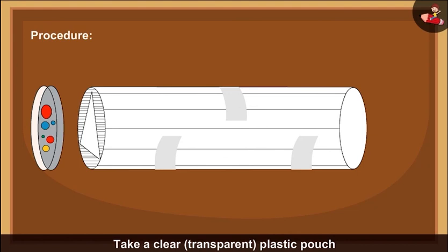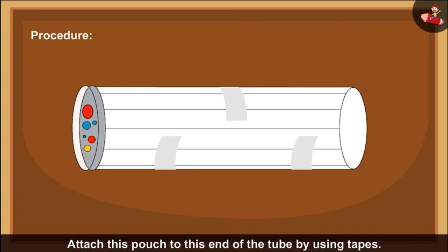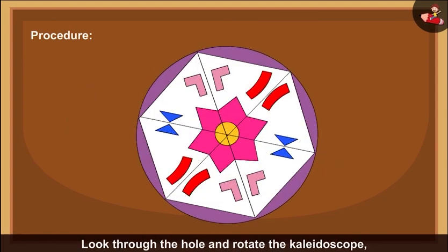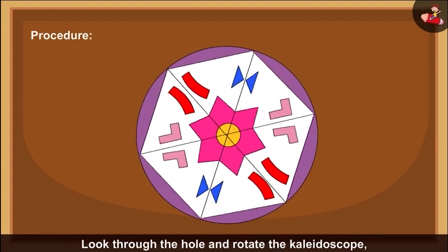Take a clear or transparent plastic pouch and put some colored beads inside the pouch. Attach this pouch to this end of the tube by using tapes. Cover the other end of the tube with a piece of white chart paper and make a hole in it. Your kaleidoscope is now ready. Look through the hole and rotate the kaleidoscope. You can see beautiful hexagonal patterns.